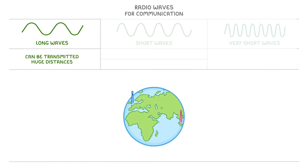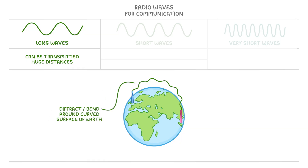Long wave radio waves can be transmitted huge distances, like from London to Singapore, without having to interact with anything along the way. This is because they diffract, or bend, around the curved surface of the Earth. So they're great for long-range communication.